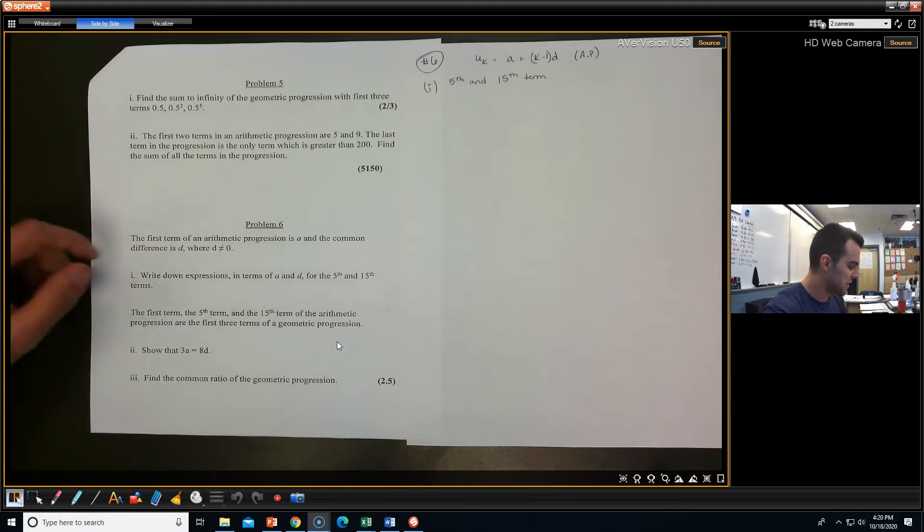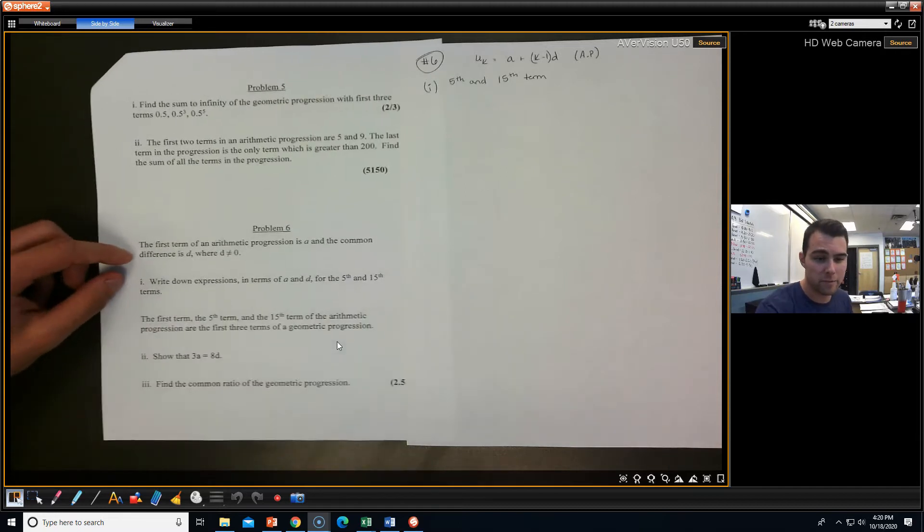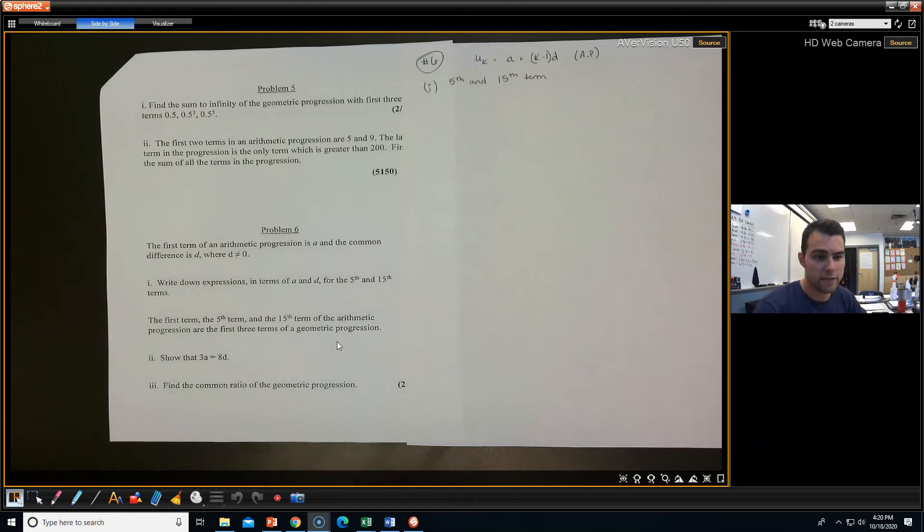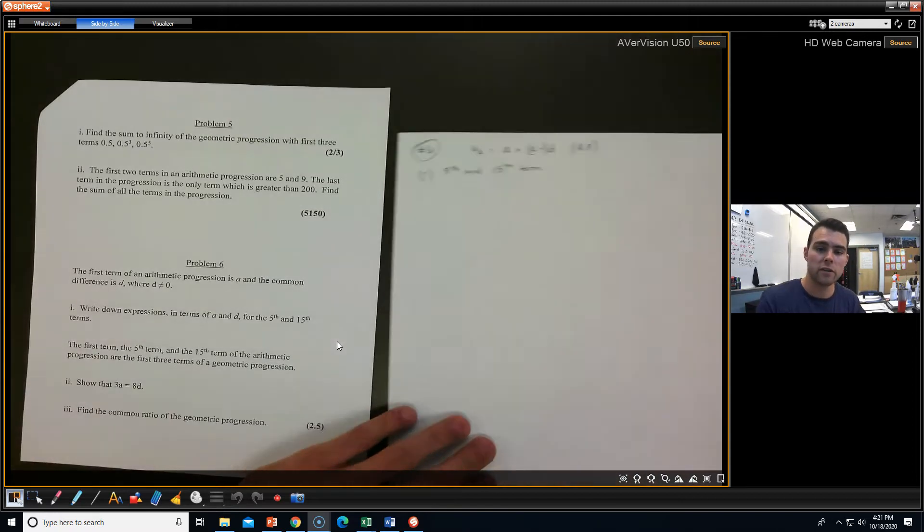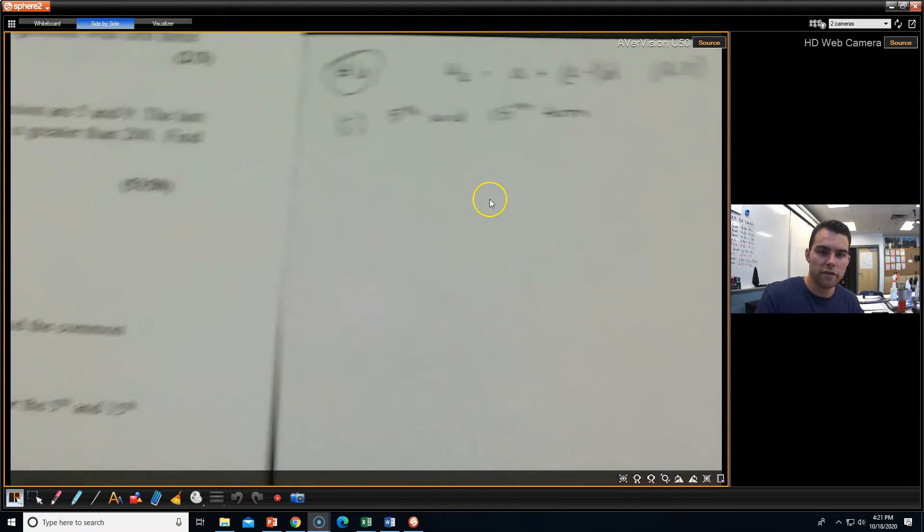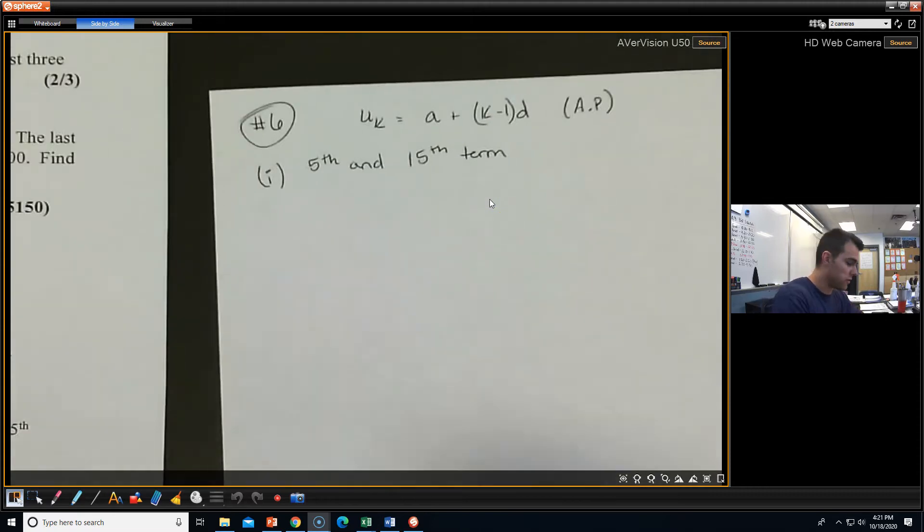So number 6 is telling me the first term of an arithmetic progression is A and the common difference is D, where D doesn't equal 0. So our first thing we've got to do is write down expressions in terms of A and D for the 5th and the 15th terms. So I'm using an arithmetic progression and I'm looking for the terms of the arithmetic progression. This is my equation I would use for the terms, the Kth term in an arithmetic progression. So it wanted me to do the 5th and the 15th, so let's just do that real quick.